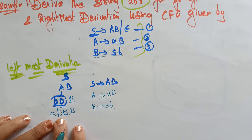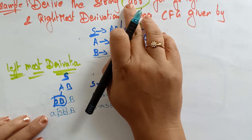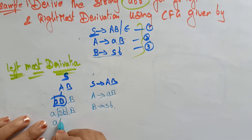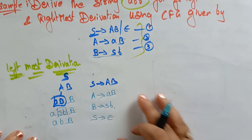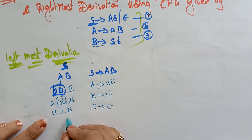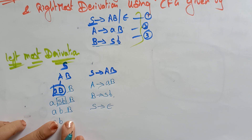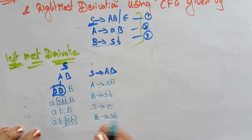So B is replaced with SB. Now there is a non-terminal S. I want to replace this S with epsilon, because if I make S epsilon here, I get the string 'ab'. So I replaced S with epsilon. Now coming to the remaining non-terminal B, which can be replaced with SB.